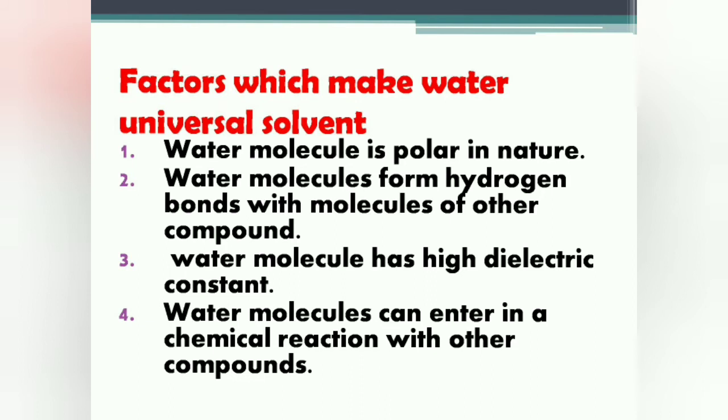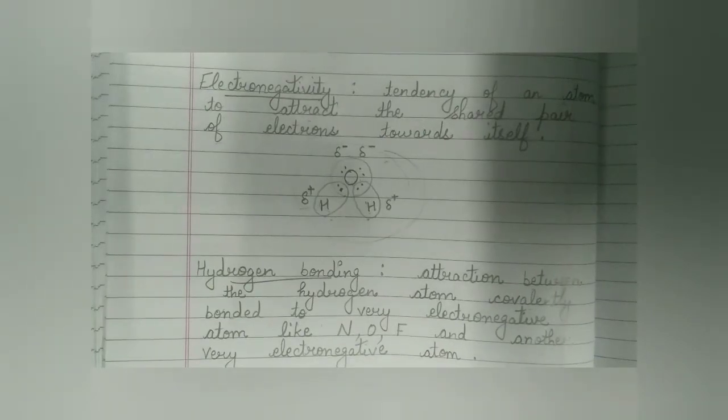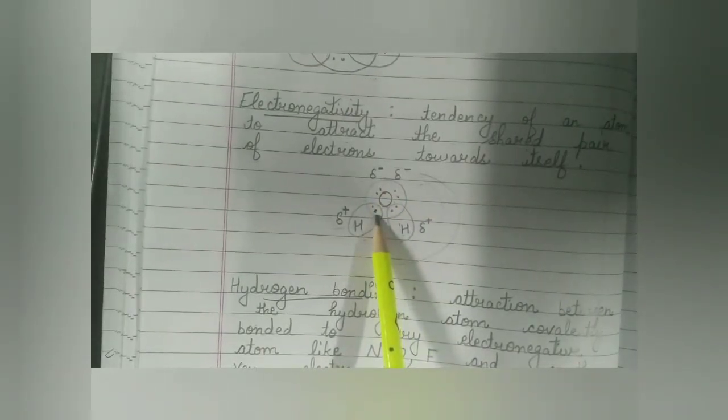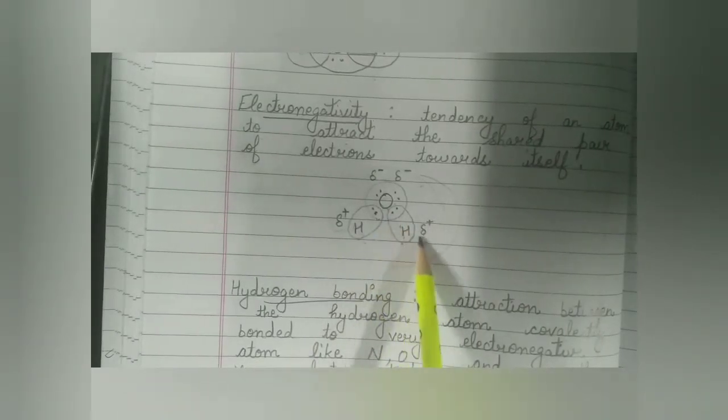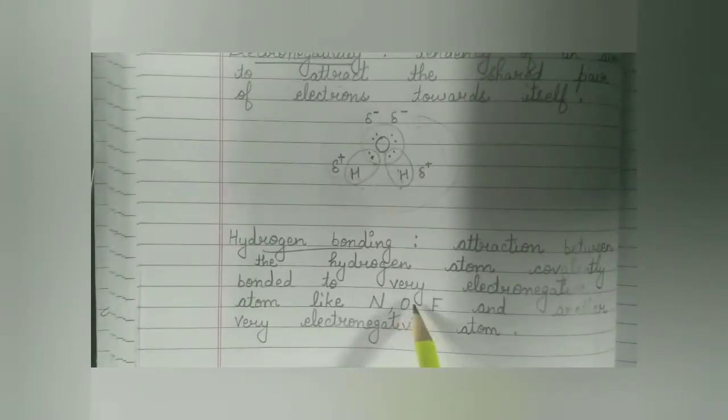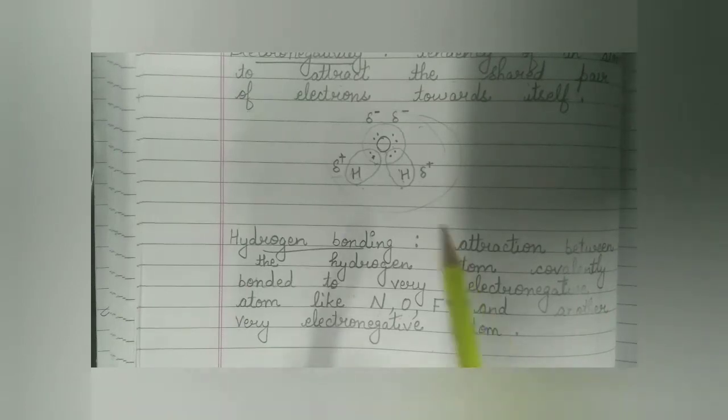The second factor which makes water a universal solvent is that water can form hydrogen bonds with the molecules of other compounds. So, what is a hydrogen bond? Hydrogen bond is the attraction between the hydrogen atom covalently bonded to very electronegative atom like nitrogen, oxygen, fluorine and another very electronegative atom. For example, in case of water, hydrogen is covalently bonded to very electronegative element that is oxygen. So, the hydrogen present in water can form attraction with other molecules in which the elements like nitrogen, oxygen, or fluorine are present. So it also makes water a universal solvent.